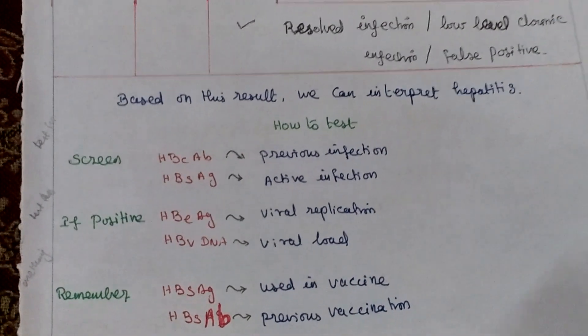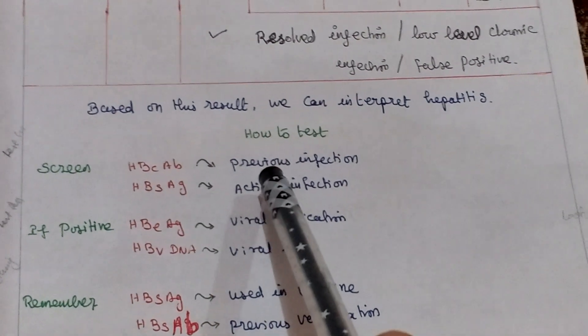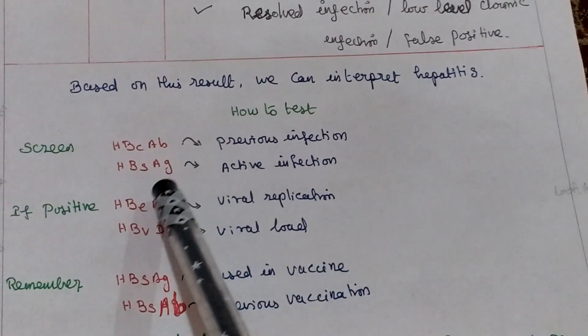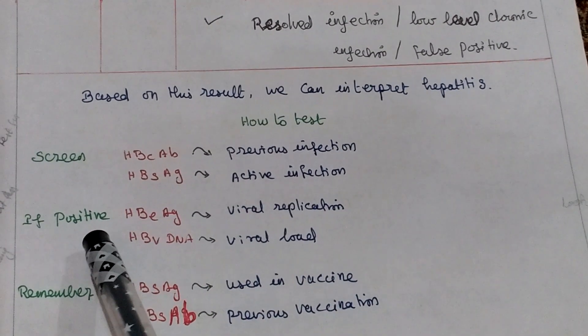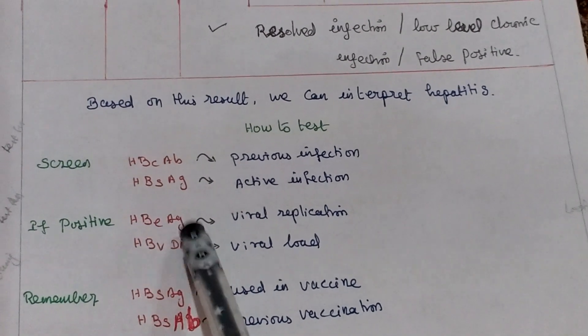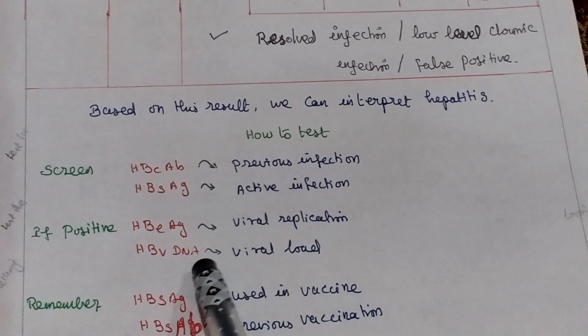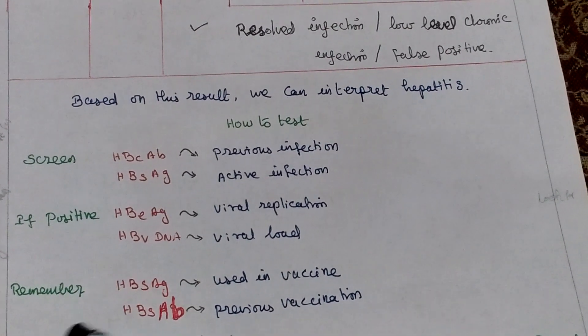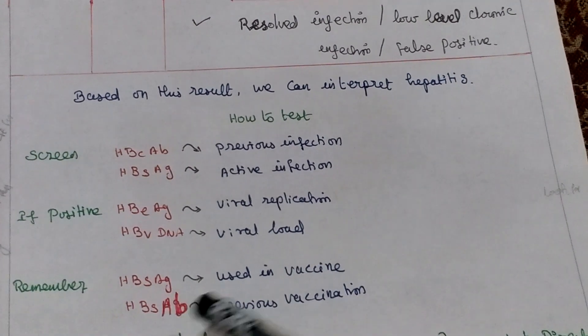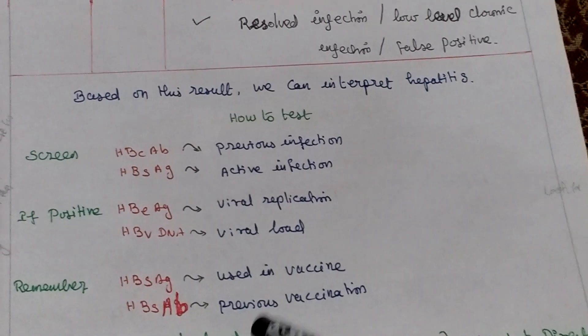How to test for screening: HBcAb indicates previous infection, HBsAg indicates active infection. In case of positive, HBeAg indicates viral replication. HBV DNA indicates viral load. Remember: HBsAg is used for vaccine, HBsAb indicates previous vaccination.